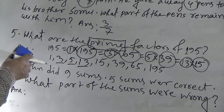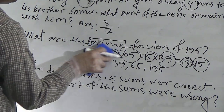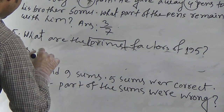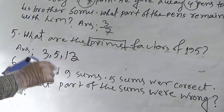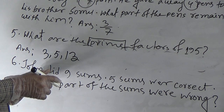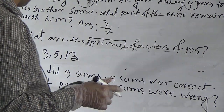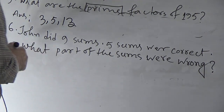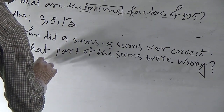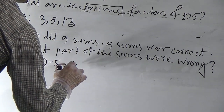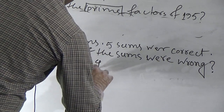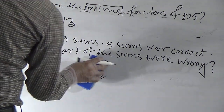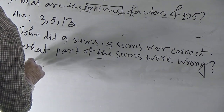So the prime factors of 195 are 3, 5, and 13. Question 6: John did 9 sums; 5 sums were correct. What part of the sums were wrong? This is similar to question 4. We subtract 5 from 9, which gives 4. So 4/9 of the sums were wrong. Our required answer for question 6 is 4/9.